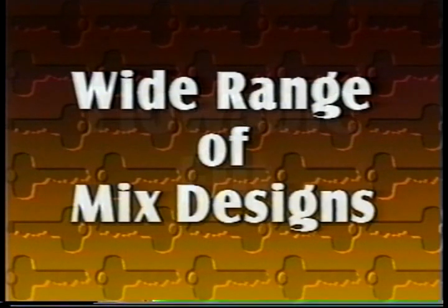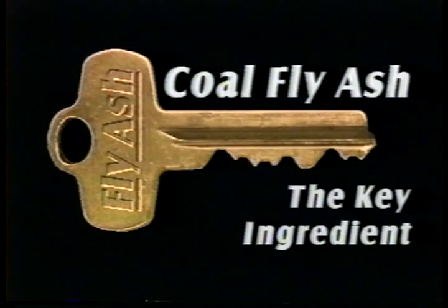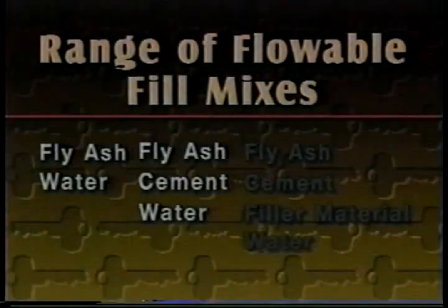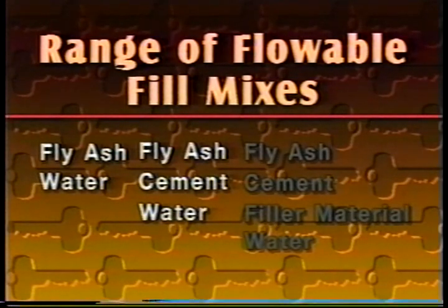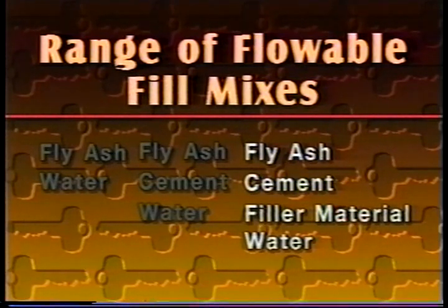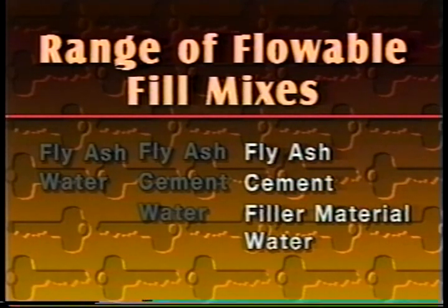There is a wide range of mix designs available for flowable fill, but in all cases the key ingredient is coal fly ash. Flowable fill mixes can contain almost all fly ash with little or no Portland cement and enough water to make the mix flowable. Other mixes can contain a high percentage of filler material such as sand or bottom ash, a low percentage of fly ash and cement, and enough added water to make a flowable mix.